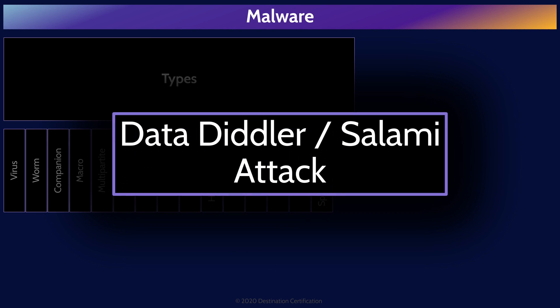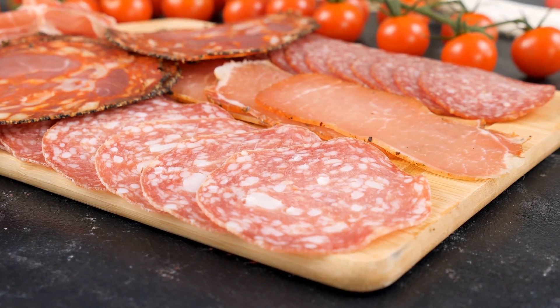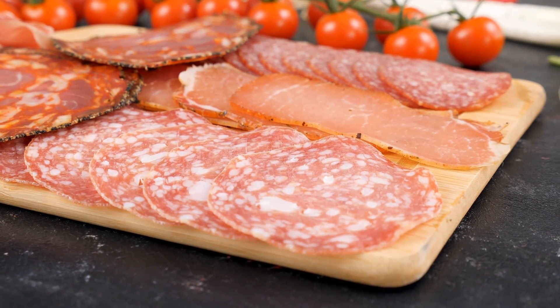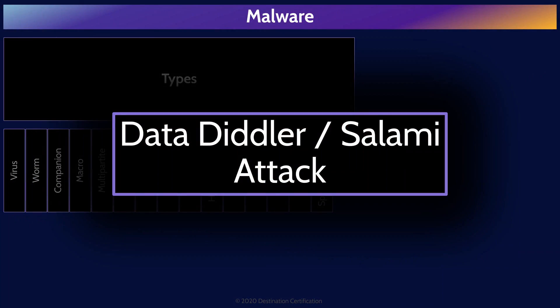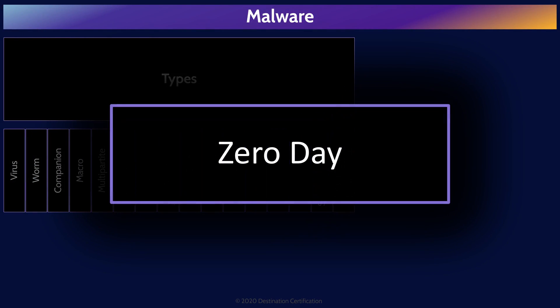Data diddlers are malware specifically designed to make small changes over a long period of time to evade detection. A type of data diddler is a salami attack, which specifically targets financial transactions — for example, shaving fractions of a penny off of many transactions. A zero-day is a vulnerability in a system that is, at first, unknown to the defenders — those that would patch or configure the system to protect it. Zero-days are particularly dangerous because they are flaws being exploited before anyone knows to detect and remediate the vulnerability. This term applies to any of the types of malware discussed — a zero-day means it's day zero of its spread and no one knows about it yet.